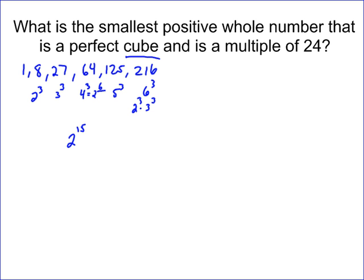So I ask, what's the smallest positive whole number that is a perfect cube and is a multiple of 24? Remember, if you've got a number that's a multiple of 24, it has to have 24's prime factorization inside its prime factorization. In this case, the prime factorization we did before is 2 to the 3rd times 3 to the 1st. 8 times 3 is 24.